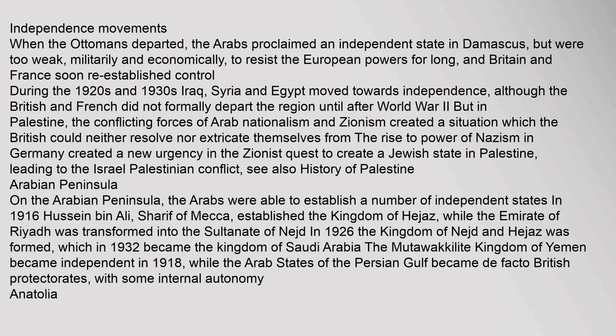Independence movements: When the Ottomans departed, the Arabs proclaimed an independent state in Damascus, but were too weak militarily and economically to resist the European powers for long, and Britain and France soon re-established control during the 1920s and 1930s. Iraq, Syria, and Egypt moved towards independence, although the British and French did not formally depart the region until after World War II. But in Palestine, the conflicting forces of Arab nationalism and Zionism created a situation which the British could neither resolve nor extricate themselves from. The rise to power of Nazism in Germany created a new urgency in the Zionist quest to create a Jewish state in Palestine, leading to the Israel–Palestinian conflict.